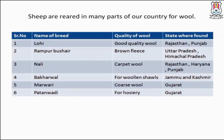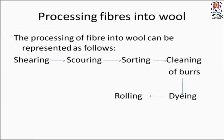Sheep are reared in many parts of our country for wool. Different breeds are found in different states: Lohi — good quality wool, Rajasthan and Punjab; Rampur Bushar — brown fleece, Uttar Pradesh and Himachal Pradesh; Nali — carpet wool, Rajasthan, Haryana, Punjab; Bakkarwal — for woolen shawls, Jammu and Kashmir; Marwari — coarse wool, Gujarat. Coarse wool means slightly rough wool.